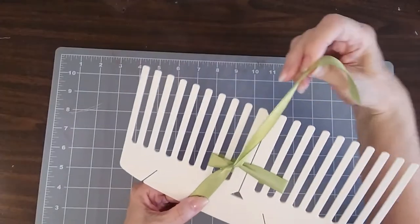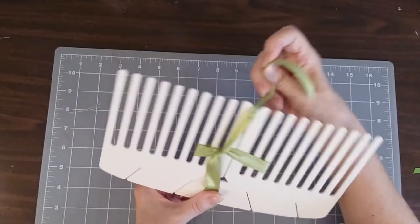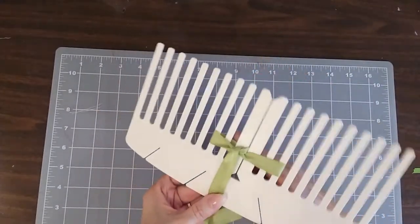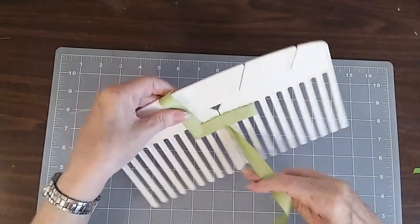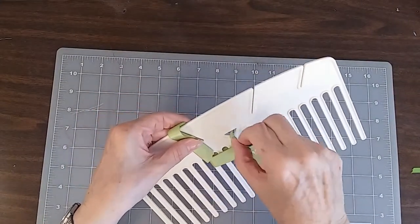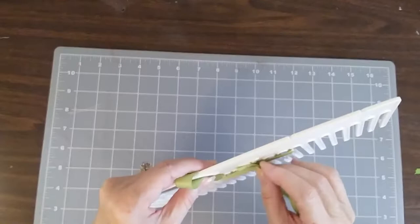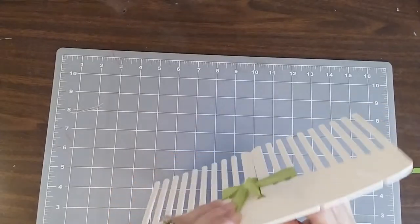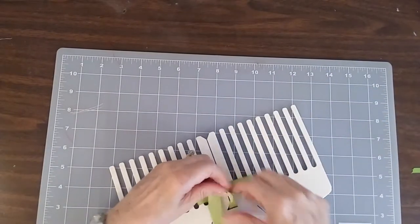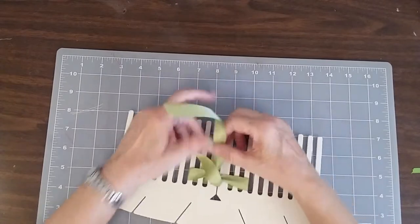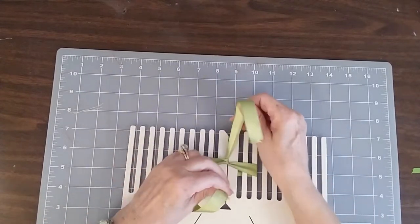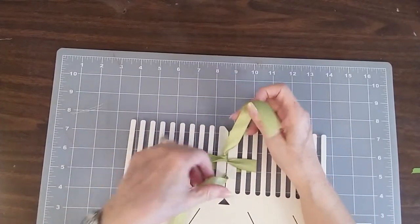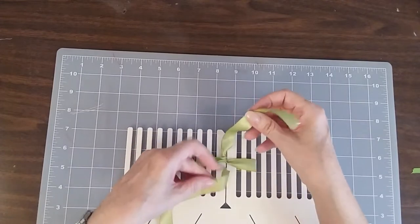Take this top piece, thread it through the center, around the back, over the ribbon, and through the bottom. Pull it taut, and then make a simple knot.